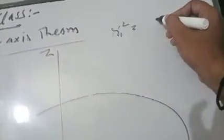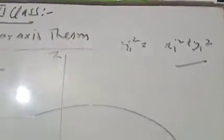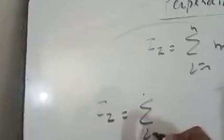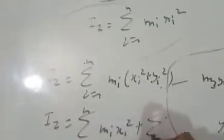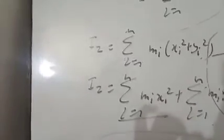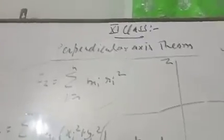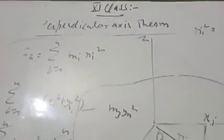Since r_i squared equals x_i squared plus y_i squared, the moment of inertia about the z-axis I_z equals summation i running from 1 to n of m_i·r_i squared, which equals summation m_i·(x_i squared plus y_i squared). This equals the moment of inertia of the body about the x-axis plus the moment of inertia about the y-axis. This is the perpendicular axis theorem. If you have any doubts, thanks for watching.